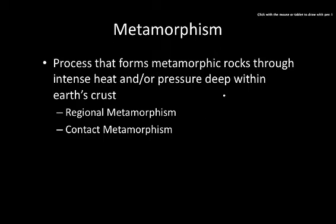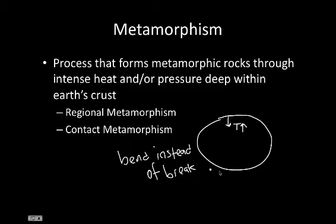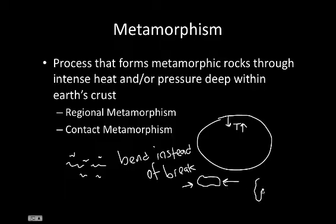A little note about the 'deep within the Earth's crust' part. The deeper you go in the Earth, the warmer the temperatures get, and at that point the rocks will tend to bend instead of break. This is important because if we want to change one rock into another, it's the intense heat and pressure that causes that. If this happened at the surface, the rock would simply break into little pieces of sediment and you'd get sedimentary rock. However, because this happens deep within the Earth where temperatures are high, you can take one rock, expose it to intense heat and pressure, and it can squeeze into a different rock — that's the whole idea behind metamorphism.